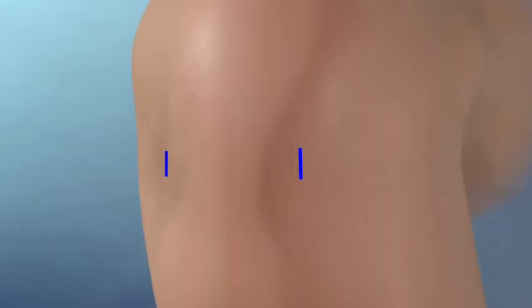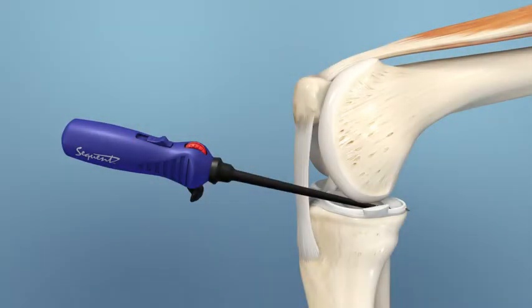Create vertical portal incisions by palpating above the joint line near the inferior pole of the patella. These incisions should be used since they allow for compensation of tibial plateau slope.